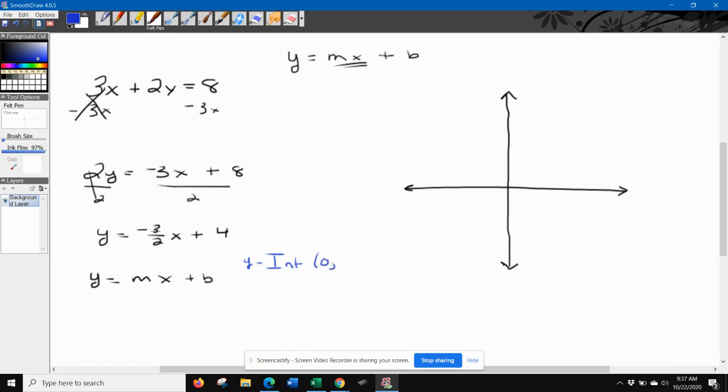Well, plug in 0. Negative 3 halves times 0 is 0, plus 4 is 4. And it's always that value because the x will cancel this out when it's 0. So we just have 4. So 1, 2, 3, 4 is right there. So that's our first point in the graph. And the next one is the slope.